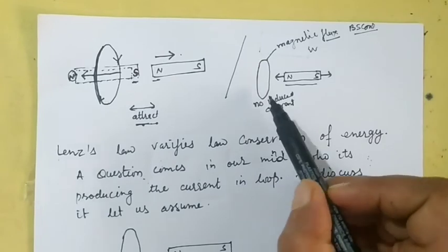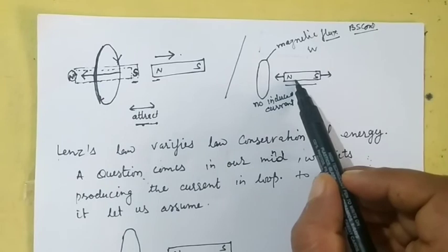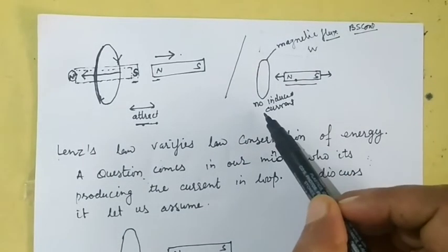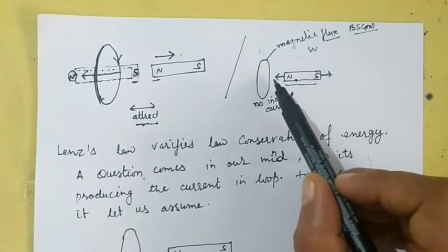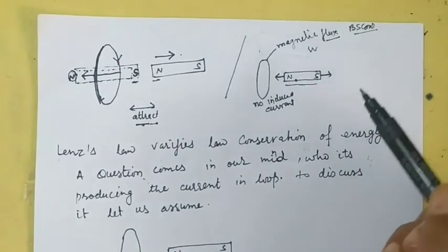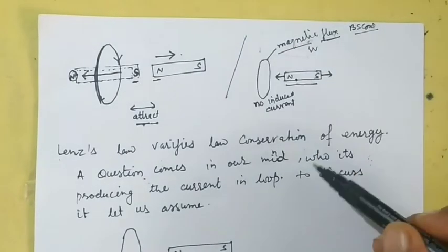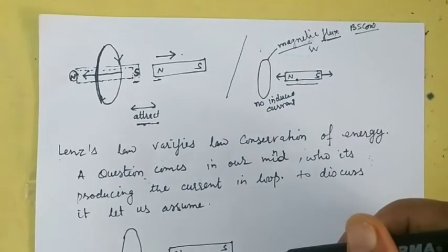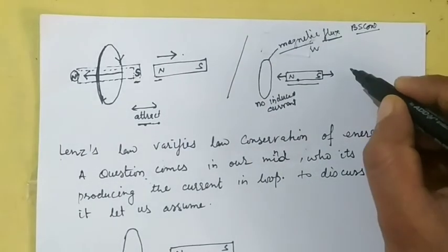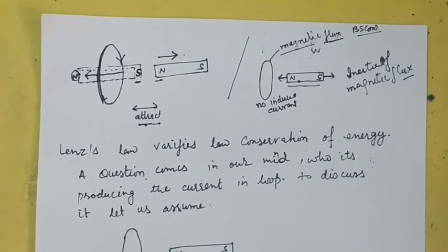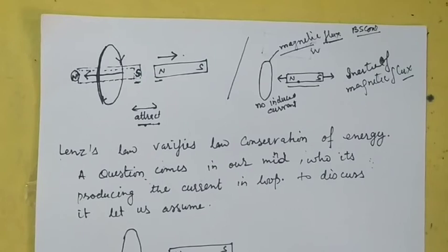The magnetic flux wants to remain the same. If the magnet is held stationary, a certain magnetic flux is linked with the loop. If you push it away or towards the loop, an induced current is produced to oppose the change in magnetic flux. This loop is like an inertia of magnetic flux — it doesn't want to change; it wants to remain in the same state of magnetic flux.